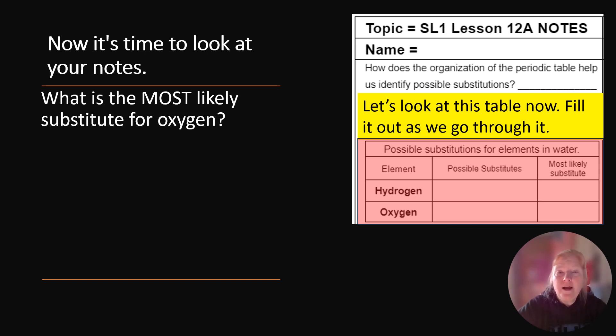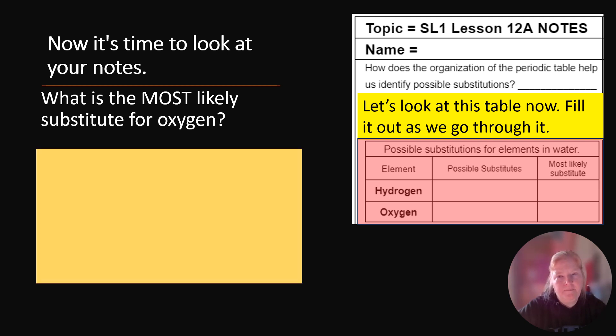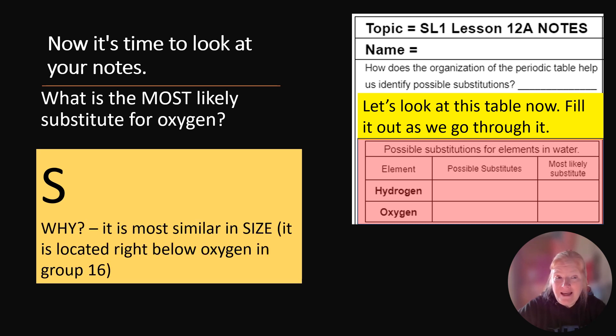But of those, what is the most likely substitute for oxygen? What do you think? Yeah, it's going to be S. Why? Because it is most similar in size. It is located right below oxygen in group 16.